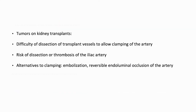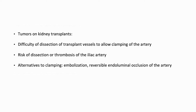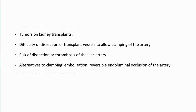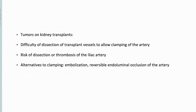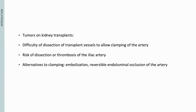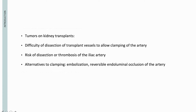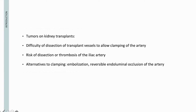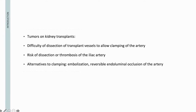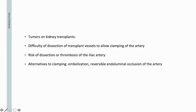Tumors on kidney transplants are a very specific entity with no guidelines currently available for this pathology. Partial nephrectomy has shown similar benefits to total nephrectomy, but it carries a higher difficulty of dissection of the transplant vessel to allow clamping of the artery, causing a risk of dissection or thrombosis of the iliac artery. Alternatives to clamping are either embolization or reversible endoluminal occlusion of the artery.